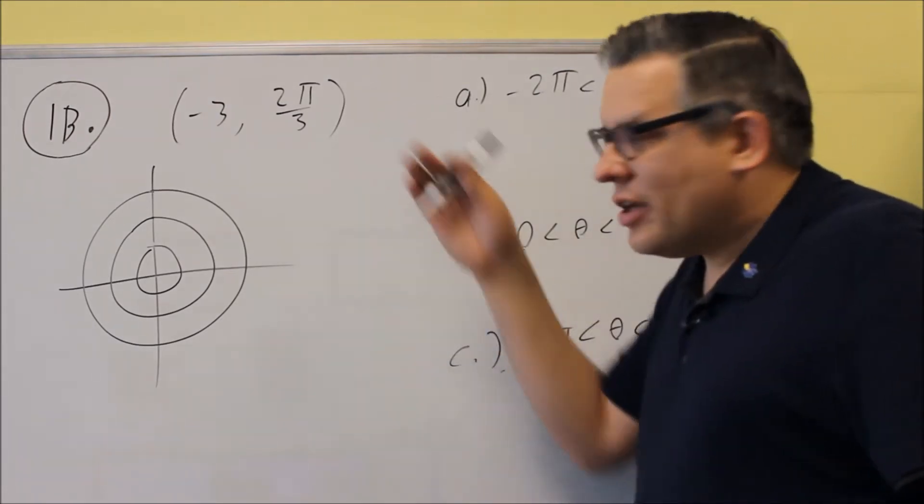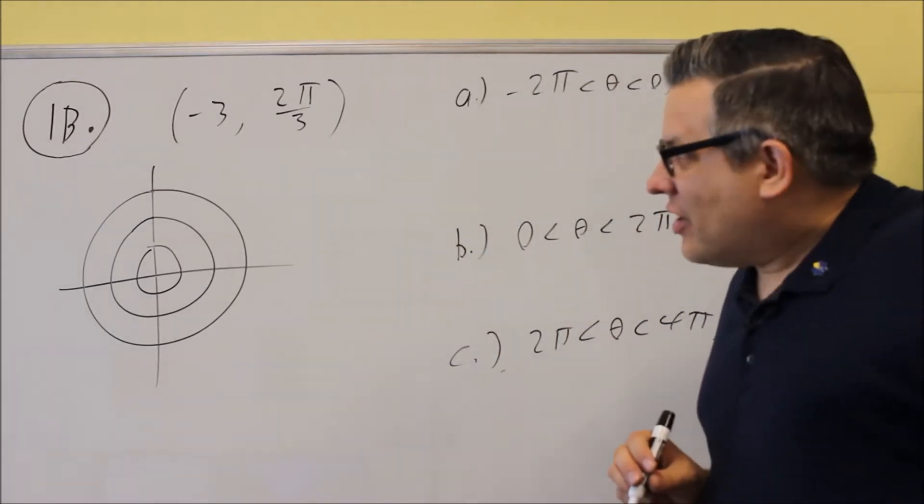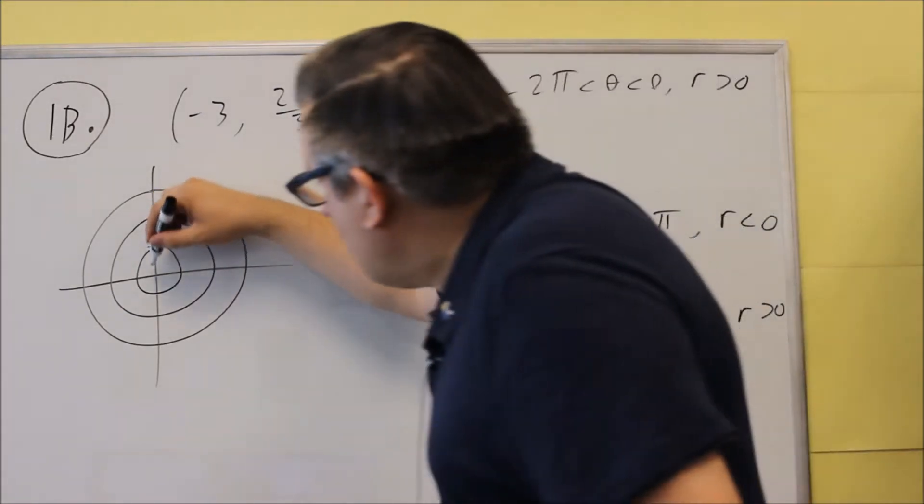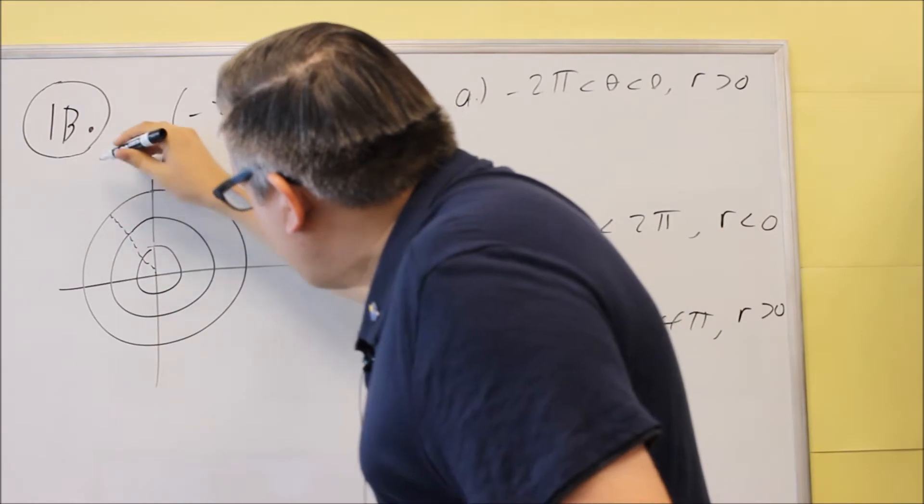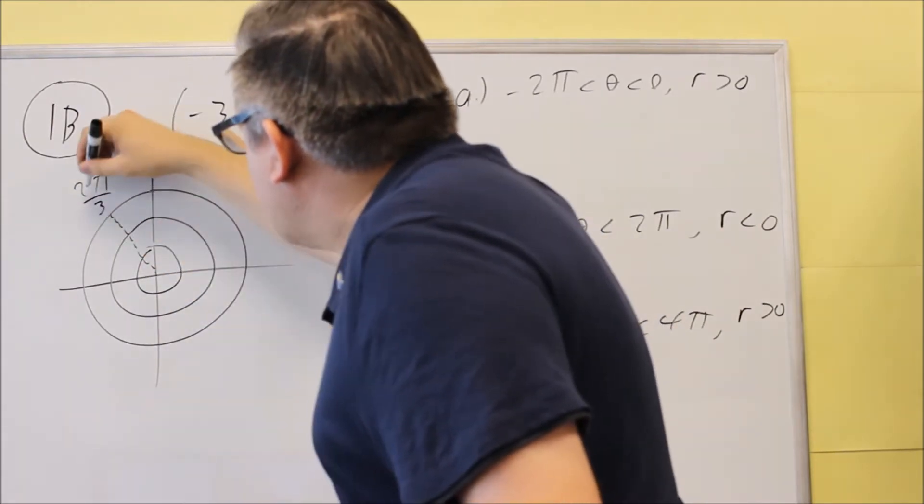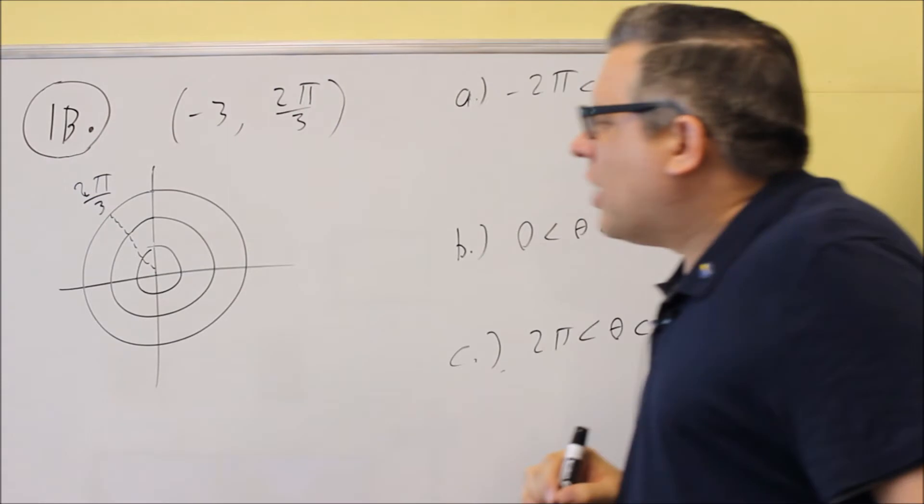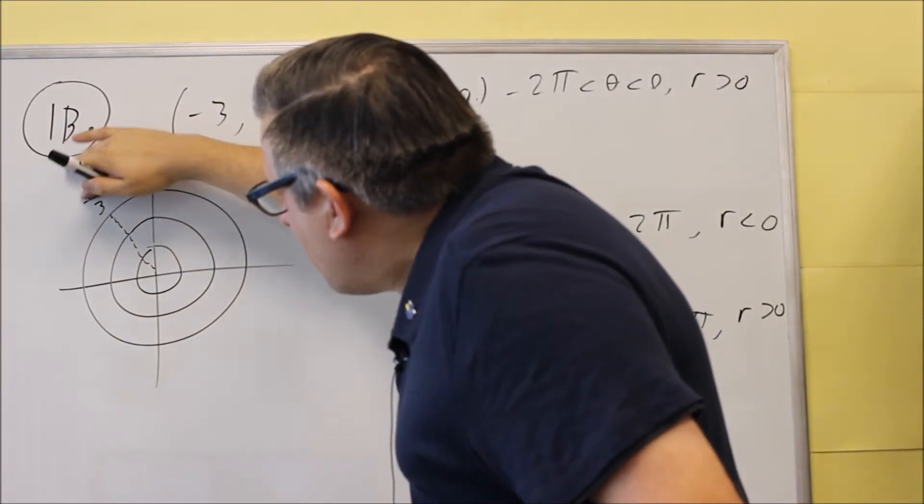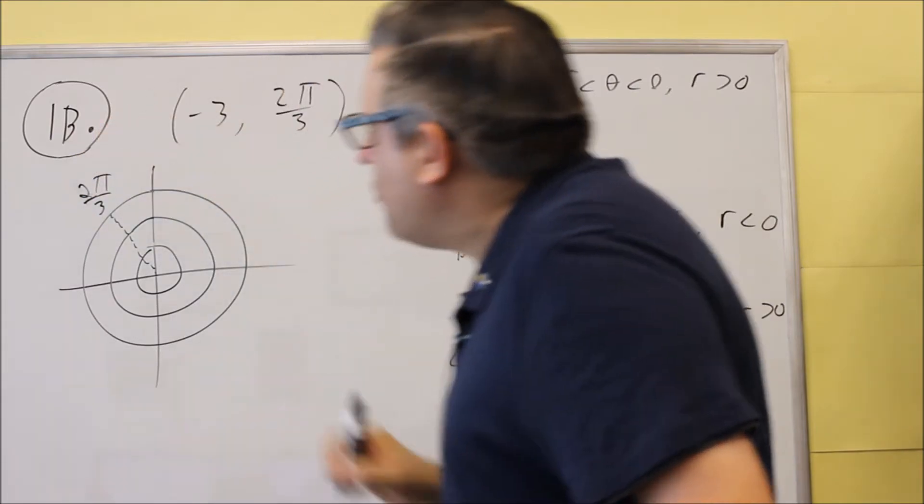So first thing we're going to do is we need to plot this. Now 2π over 3 is already an angle that is labeled on our grid here, and that's going to be right here in the second quadrant. So this is going to be 2π over 3 given right there.